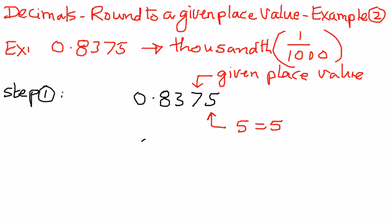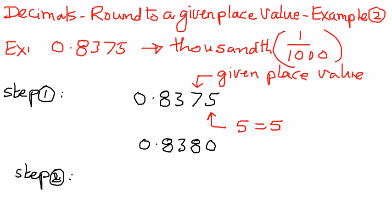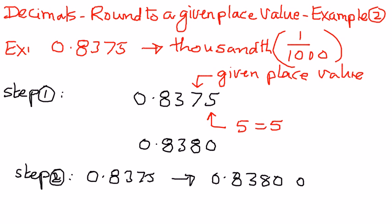We're going to write that as 0.838, and then make that 5 equal to 0. So, as step 2, we come back and state this as: the given number 0.8375 can be rounded to the nearest thousandth place as 0.8380, or we can just write this as 0.838 without the trailing zero. That is fine as well.